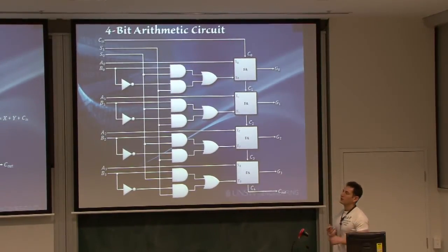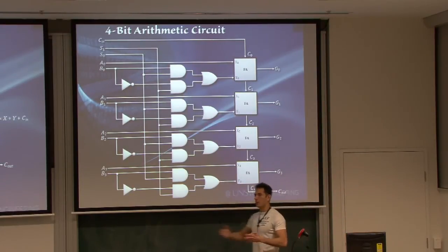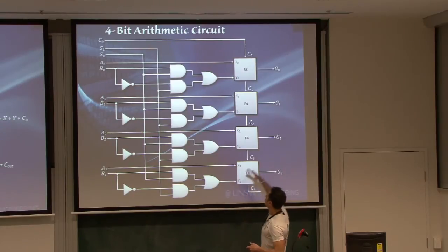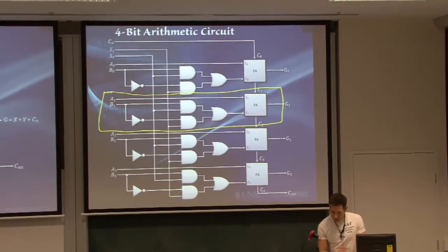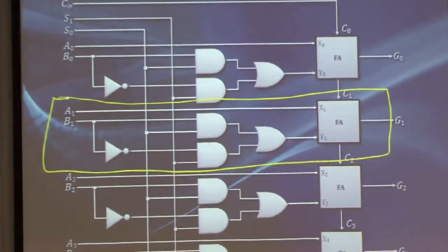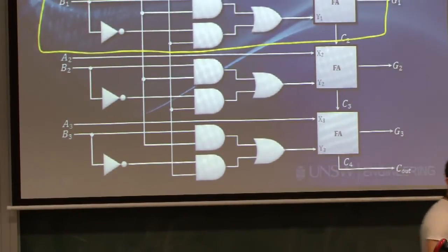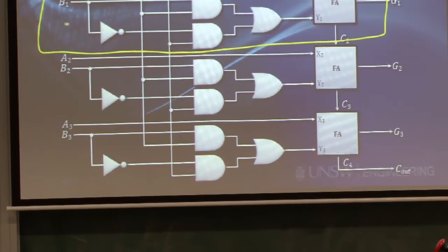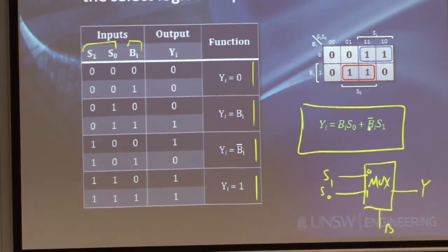Now this is an example of a 4-bit arithmetic circuit. I'll start off by saying you can extend this to be as many bits as you want. Each one of those stages is just identical to the other stages. So we have our full adders here that we've created last week. We have our A signal, our A bit, going straight into the full adder.